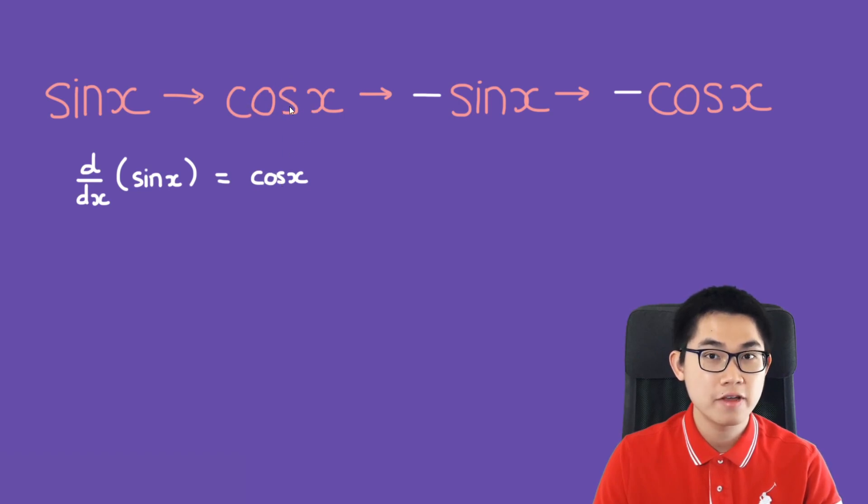And what is the derivative of cosine of x? Well, it's going to be negative sine of x, and the derivative of negative sine of x is going to be negative cosine of x.